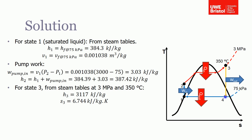The last enthalpy to find is at state four, which is a little trickier. Because we're assuming this operates on the ideal cycle, the turbine has an isentropic efficiency of 100%, so the entropy at state three equals the entropy at state four. We're going to use that condition to find the enthalpy at state four.